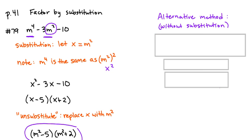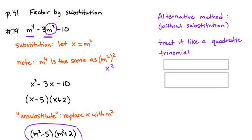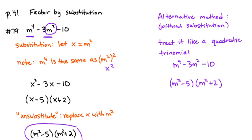So the alternative method is just to take a look at our expression, treat it like a quadratic trinomial. In other words, treat it like the quadratic expressions we're used to factoring. We're used to things like m squared, minus 3m, minus 10, break it into two sets of parentheses. So you say to yourself, let's pretend that wasn't there.